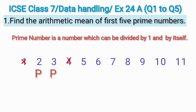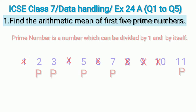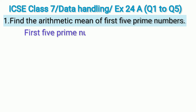Four is not a prime number because it appears in the 2 times table. Five is a prime number. Six is not, because 2 times 3 is 6. Seven is a prime number. Eight is not, as 2 times 4 is 8. Nine is not a prime number, as 3 times 3 is 9. Ten is not, as 2 times 5 is 10. Eleven is a prime number. So our first five prime numbers are 2, 3, 5, 7, and 11.